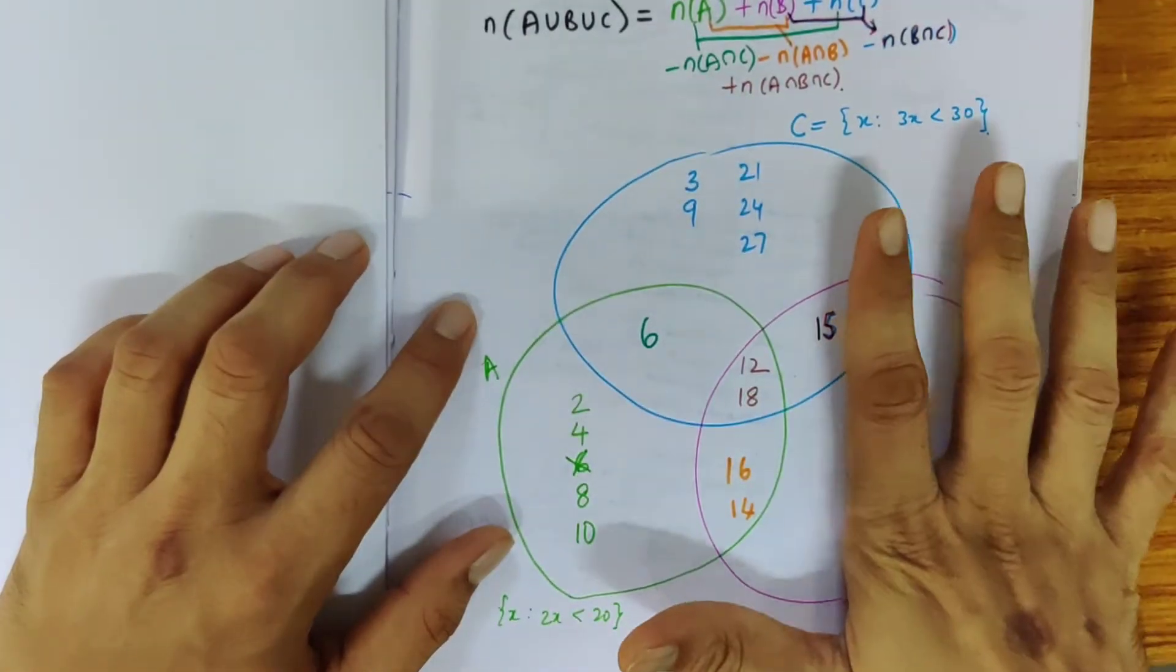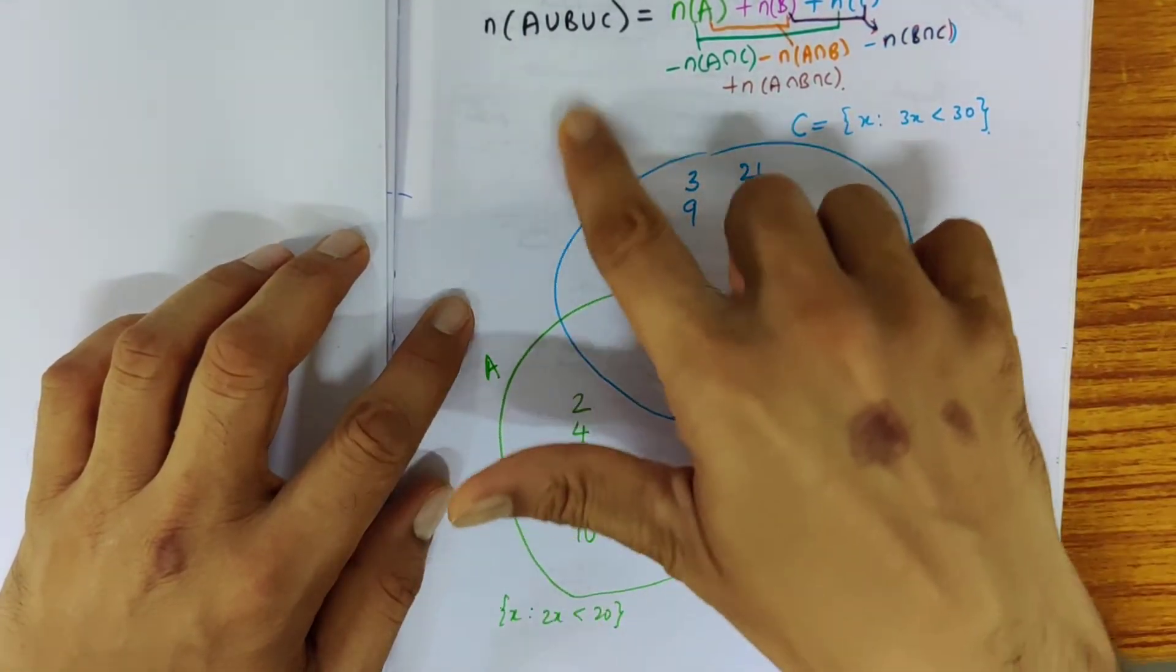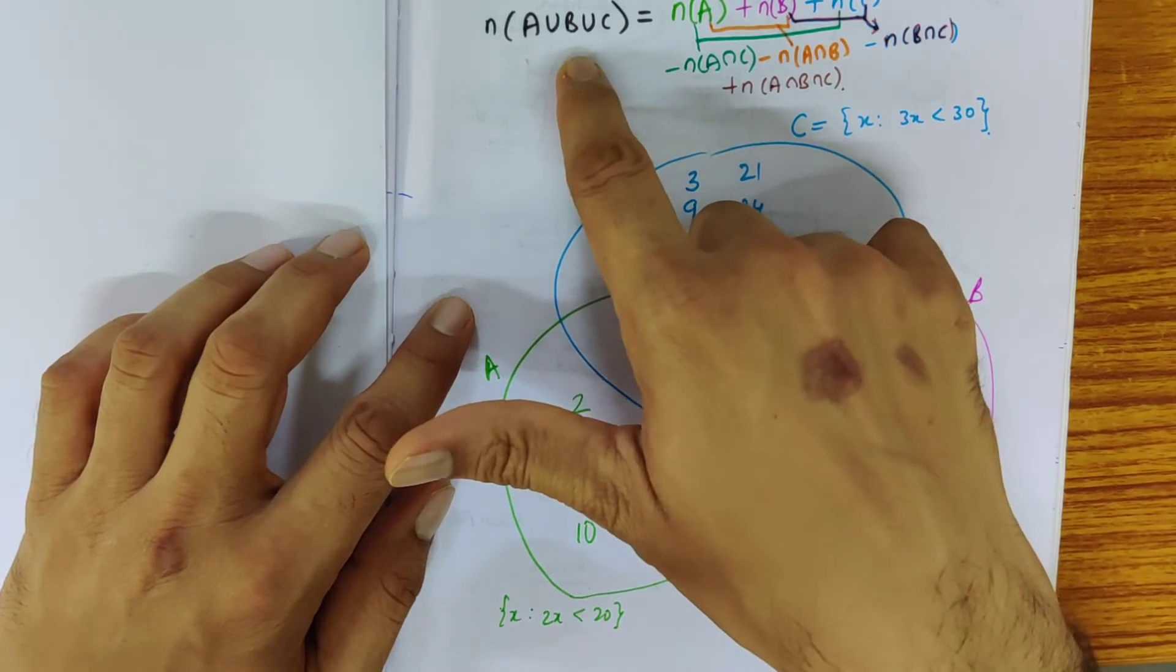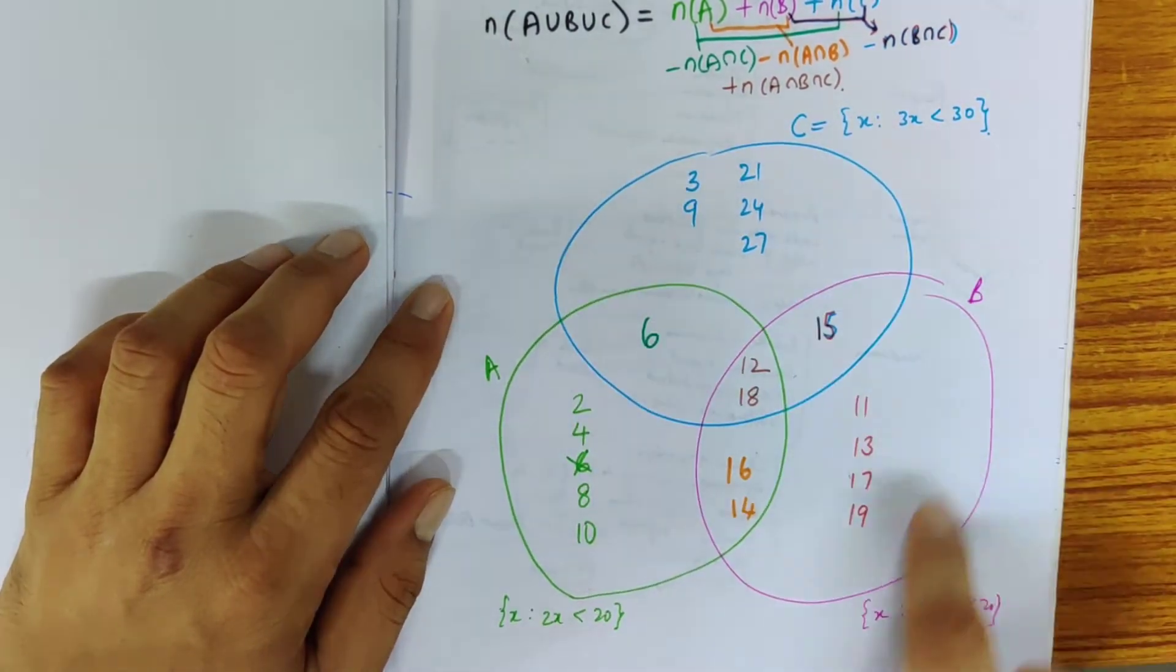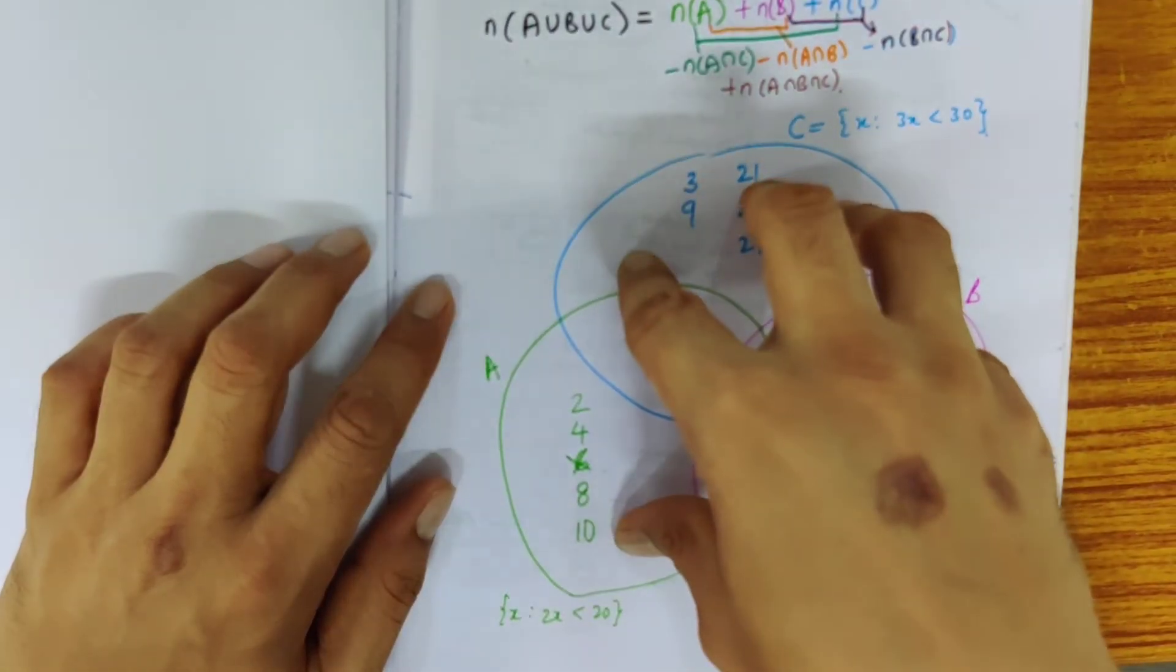So now what should we do to get this, what I have written cardinality of something that is there in all of them together. What does that mean?